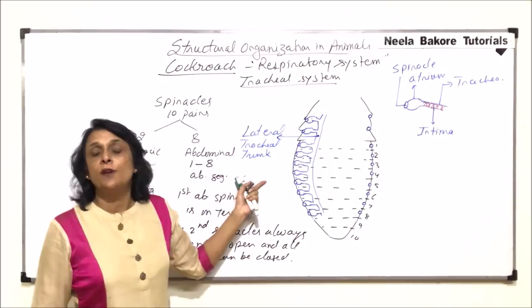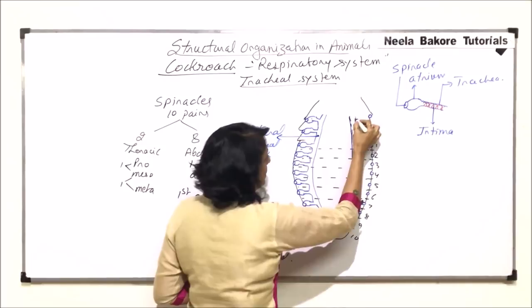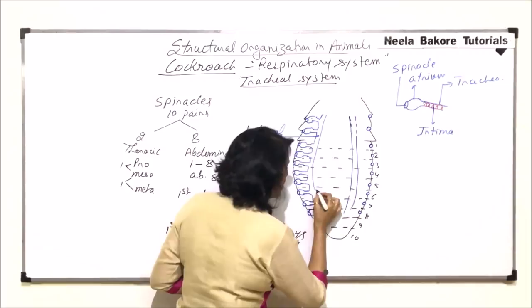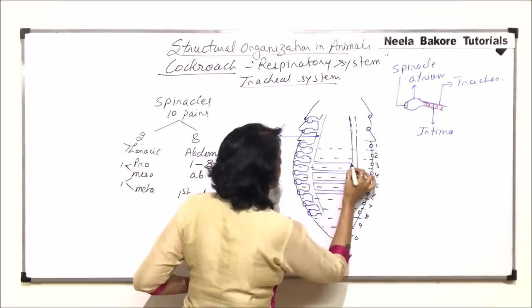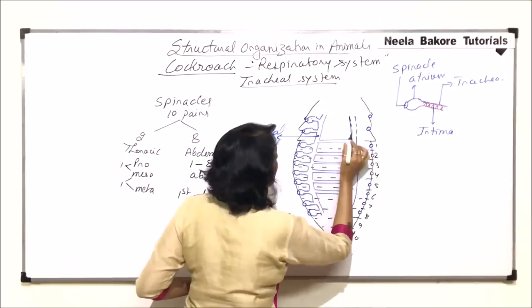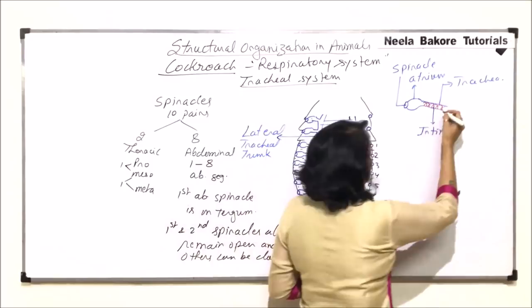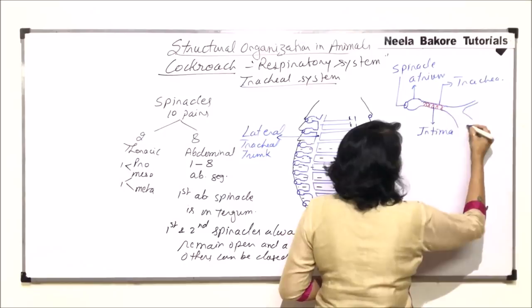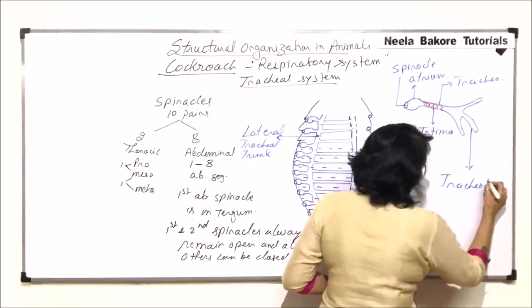Now, how does respiration take place? There are two lateral tracheal trunks, and these are also interconnected by transverse tubes. All these tubes are basically interconnected so that when air moves in, it can diffuse to all parts of the body. The tracheal tube divides into branches known as tracheolar ducts, or simply tracheals.